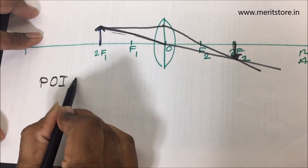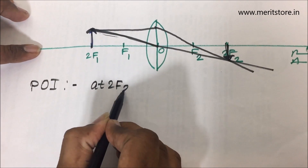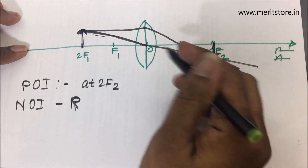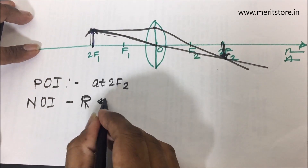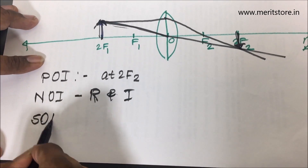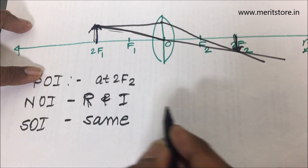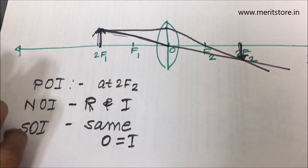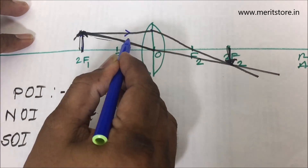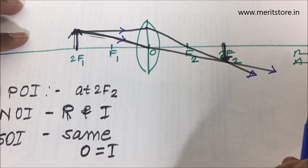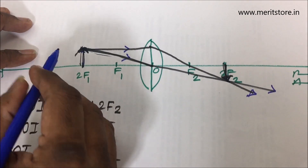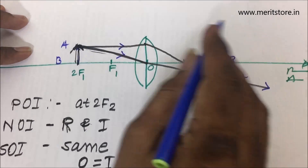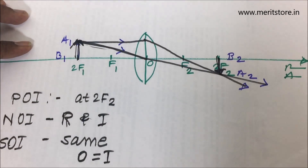The position of the image is at 2f2. The nature of the image is real and inverted. The size of the image is the same size as the object — the height of the object equals the height of the image. Add directional arrows on both sides of the lens, label the object AB and image A1B1.